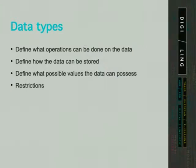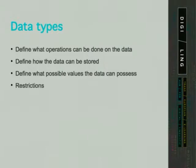Why does Python even have data types? Well, data types define what operations can be done on the data — that is, how we can manipulate the data. Data types also define how the data can be stored and what possible values it can possess. For example, if we want to do multiplication, we will use one of the numeric data types. If we have to handle some text, we will use strings.